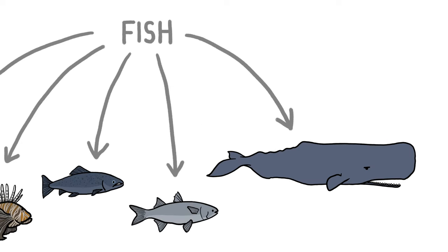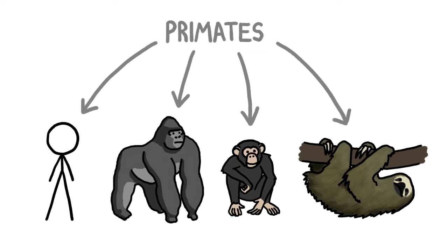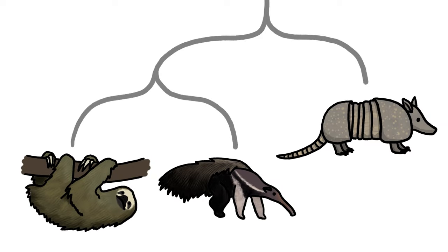So despite the fact that whales have fins, they're more closely related to hippos than to fish. And even though sloths are long-armed and hairy and climb trees, their cousins are anteaters and armadillos.